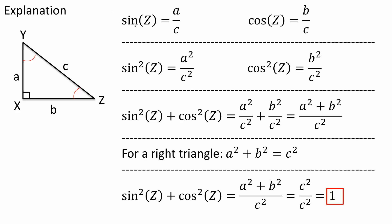We know that sine Z is equal to opposite over hypotenuse — opposite being A, hypotenuse being C. And cosine Z is equal to adjacent over hypotenuse, so B divided by C.